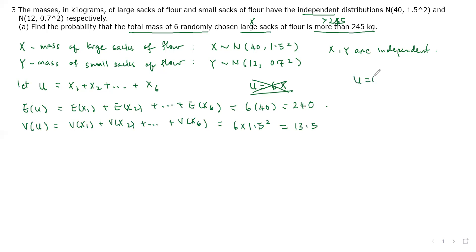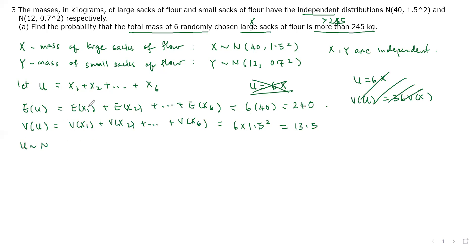If you use U = 6X, then the variance of U would be 36 times the variance of X, which is very different from 6 times the variance of X, so that cannot be used. U follows a normal distribution because the sum of six normal distributions is still normal, with a mean of 240 and a variance of 13.5.